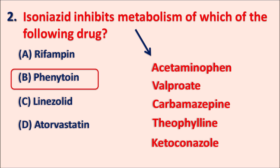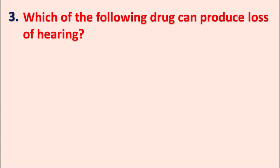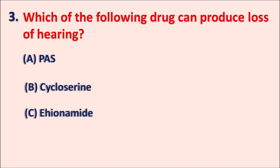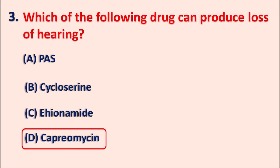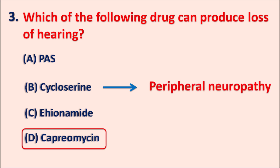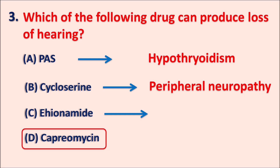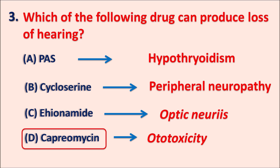Third question: which of the following drugs can produce loss of hearing? Options: A) para-aminosalicylic acid, B) cycloserine, C) ethionamide, D) capreomycin. The right answer is capreomycin. Cycloserine can produce neurotoxicity and peripheral neuropathy, and at a toxic dose some hearing loss. Para-aminosalicylic acid causes hypothyroidism and hepatotoxicity. Ethionamide particularly produces optic neuritis. But capreomycin, being an aminoglycoside antibiotic, produces ototoxicity even at a therapeutic dose, causing loss of hearing.